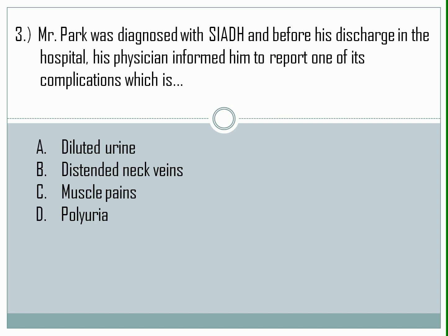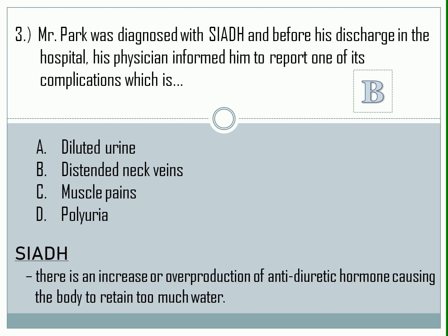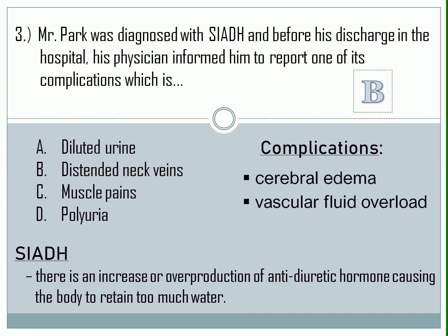Question number 3. The correct answer is Letter B. In SIADH, or syndrome of inappropriate anti-diuretic hormone, there is an increase or overproduction of anti-diuretic hormone causing the body to retain too much water. Complications include cerebral edema, vascular fluid overload as manifested by distended neck veins, seizures, and coma. All the other choices fall under diabetes insipidus.